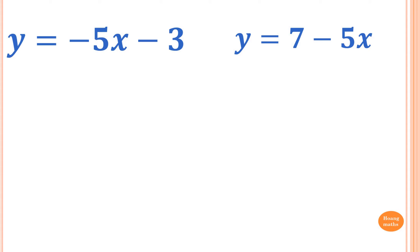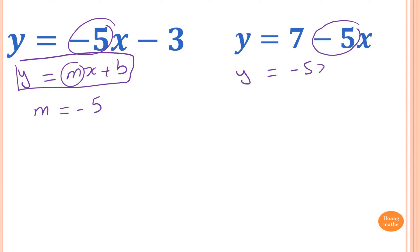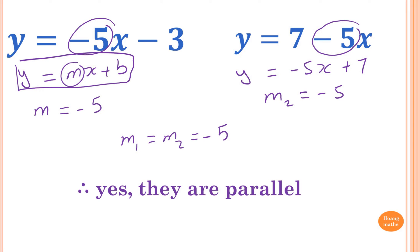Are these two lines parallel? To find out whether they're parallel or not, we need to find the gradient. If the gradients are the same, they are parallel; if not, they're not — as simple as that. This first equation is already in the form y = mx + b, the gradient-intercept form, so the gradient is negative five. For the second one, the coefficient of x is also minus five — it can be written as minus five x. So the gradient m2 equals negative five. Both gradients are the same, m1 = m2 = -5, so therefore they are parallel.